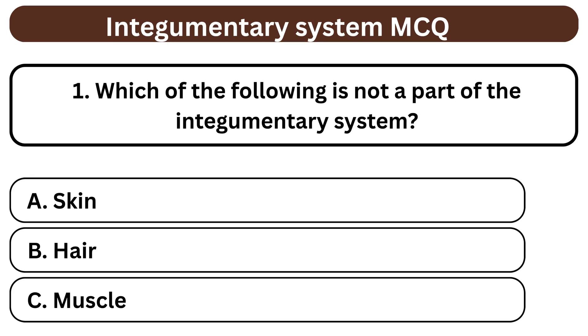Question 1. Which of the following is not a part of the integumentary system? A. Skin. B. Hair. C. Muscle. The answer is C. Muscle.